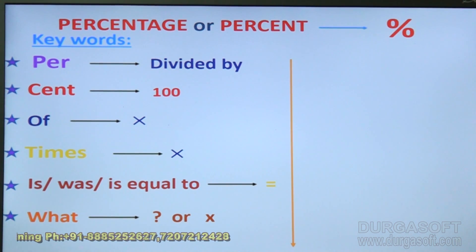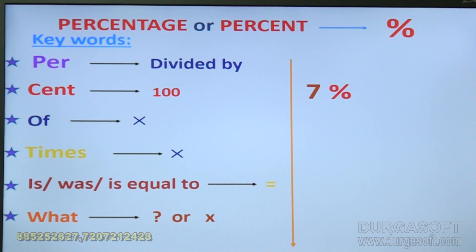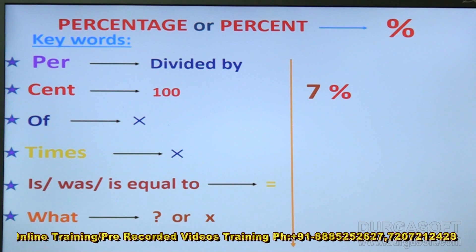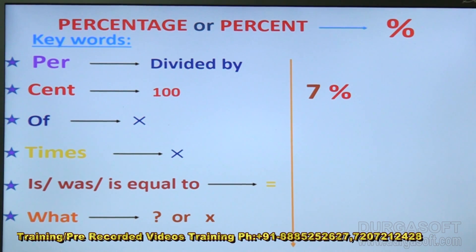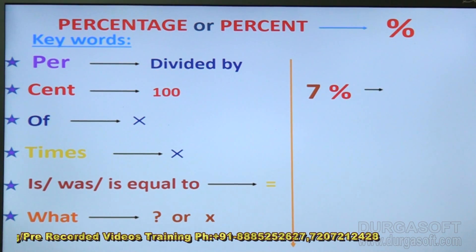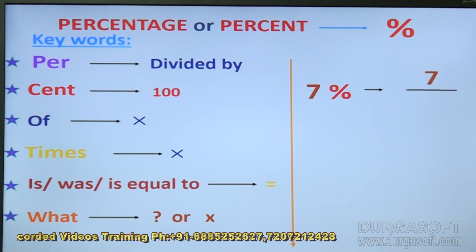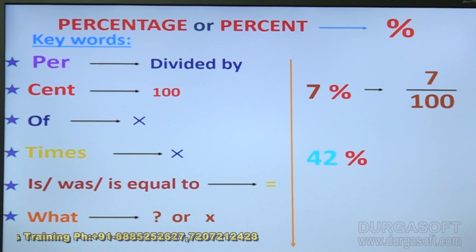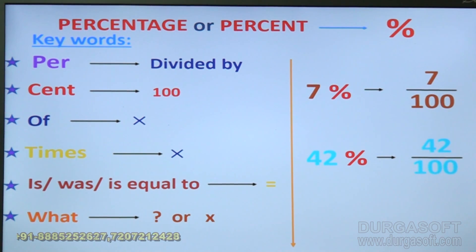Now let us see how these keywords are going to be applied in understanding the real-time exam number pattern. How do we read 7%? Seven percent — there are three words: seven, per, cent. Apply the meanings: seven per cent is nothing but seven divided by hundred. Similarly, 42% — forty-two per cent — is forty-two divided by hundred. That is how we apply these terms in the real-time number format.